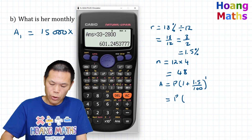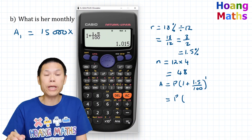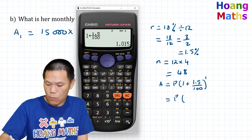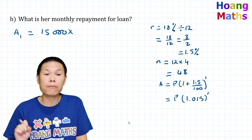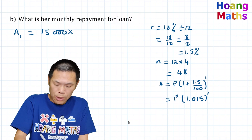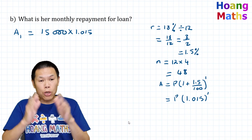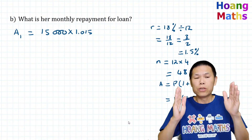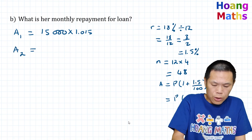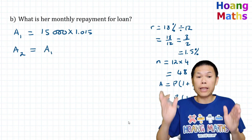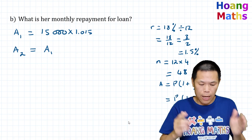So A1 = 15,000 × 1.015^1. Because she doesn't make any repayment in the first month, this is how much she owes at the end of month one. At the end of the second month she owes A1 plus interest on top, even though she still doesn't make a repayment.